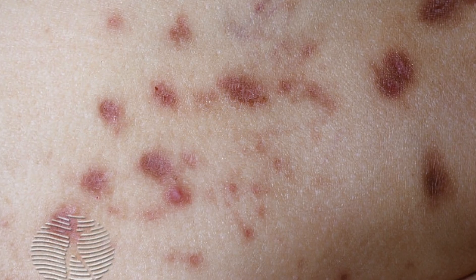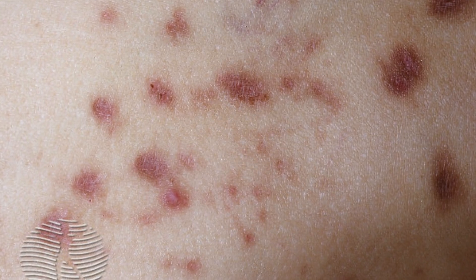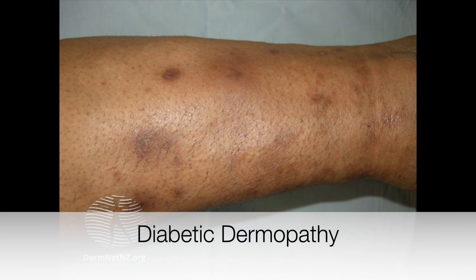If you've got diabetes and you've noticed some small round brownish patches that have appeared on your shins, then this video is for you. In this video we're going to be talking about a skin condition called diabetic dermopathy, including what causes it, what it typically looks like including lots of clinical photographs, risk factors for developing it and finally ways to prevent this.